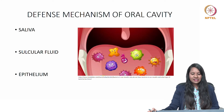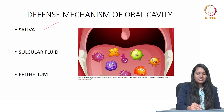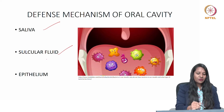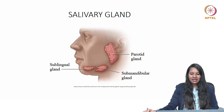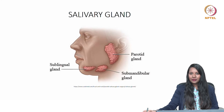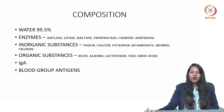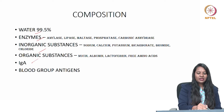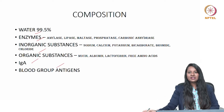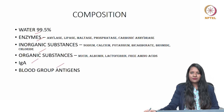The defense mechanism of the oral cavity starts from the saliva, gingival crevicular fluid, and the epithelium of the oral cavity. For saliva, we have three major salivary glands: the parotid, submandibular, and sublingual, along with various minor salivary glands. The composition of saliva includes 99.5% water with 0.5% other substances such as enzymes, inorganic and organic substances, immunoglobulins, blood group antigens, agglutinins, and coagulation factors.